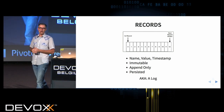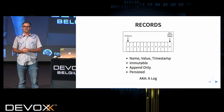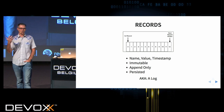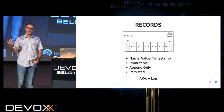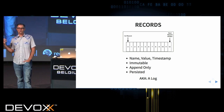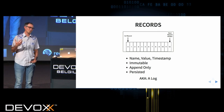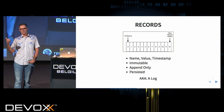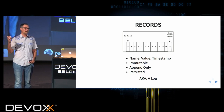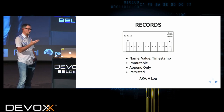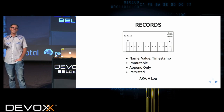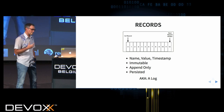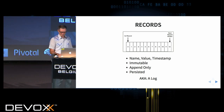This is also known as a log. All of us have worked with logs before, and you'll see a lot of similarities between a record in Kafka and a log. That's why you'll hear Kafka referred to as a distributed commit log — we're committing append-only, immutable log messages that have a key, a value, and a timestamp into the Kafka system, persisting them, and of course it's distributed.